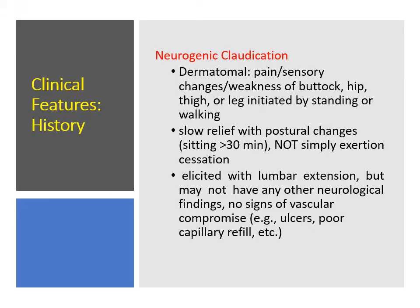The clinical presentations are widely variable and we can collect them into major categories according to their pathophysiology. Number one, we have neurogenic claudication, which means there will be dermatomal pain, sensory changes, and weakness according to the nerve root that is affected. This is aggravated by standing and walking and requires the patient to sit, usually for more than half an hour, to gain relief of the pain. It will also be elicited with lumbar extension, but there are no other signs of vascular compromise as seen in peripheral vascular insufficiency.